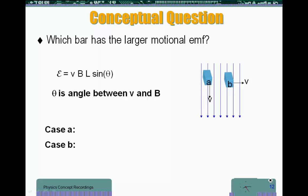Let's consider this question here. We have a magnetic field represented by these arrows here pointed downwards parallel to the page. And we have two bars, bar A and bar B.